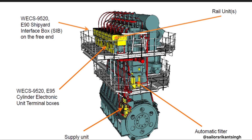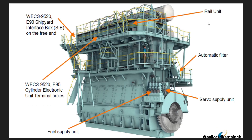Down here you can see the supply unit, which is attached to the main engine gear, and this will build up a fuel pressure which will then go to your fuel rail unit. This is the automatic filter present here — it works like a backwash filter which will filter all the impurities, and then it will go to your rail unit. So as I've told earlier, the rail unit, VCS boxes, automatic filters, servo oil unit, and fuel oil supply unit are all part of this system.